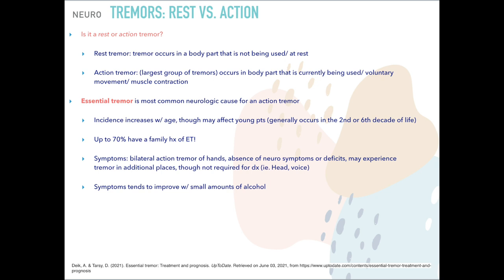An essential tremor is the most common neurologic cause for an action tremor. Its incidence increases with age, though it does affect young patients. It generally occurs either in the second decade or the sixth decade of life. Up to 70% of these patients have a family history of essential tremors. Symptoms include bilateral action tremor of the hands and absence of neurological deficits. Tremors may also occur in the head or voice, though that's not required for diagnosis.